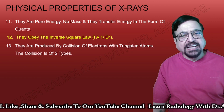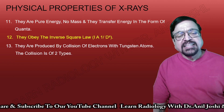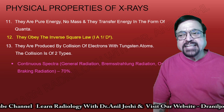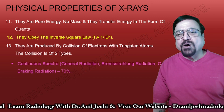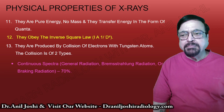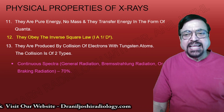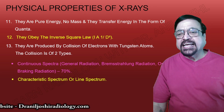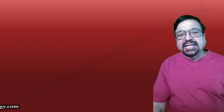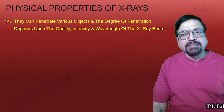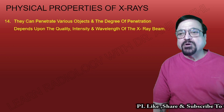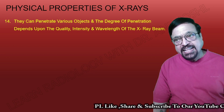X-rays are produced by the collision of electrons with a tungsten atom. This collision is of two types: first, continuous spectra — that is general radiation, also called Bremsstrahlung (a German word meaning 'braking radiation'), which accounts for 70% of production. Second, there is a characteristic spectrum or line spectrum. These are covered in detail in the production of X-rays lecture in the same series.